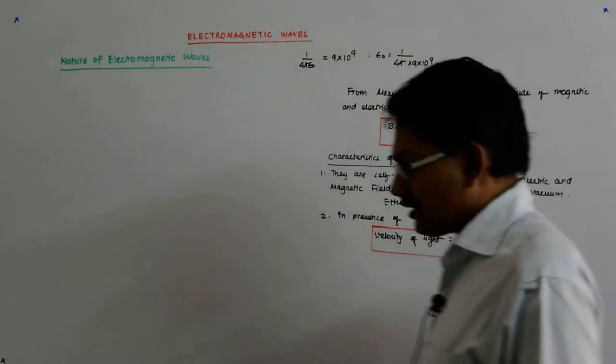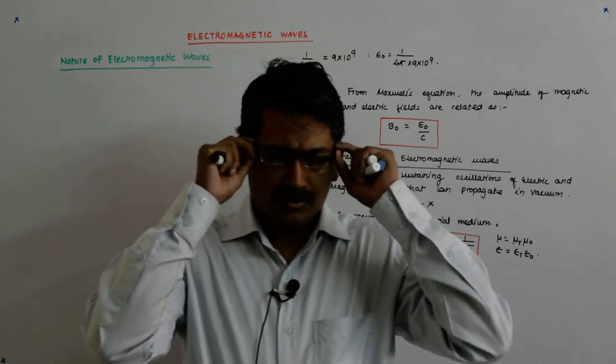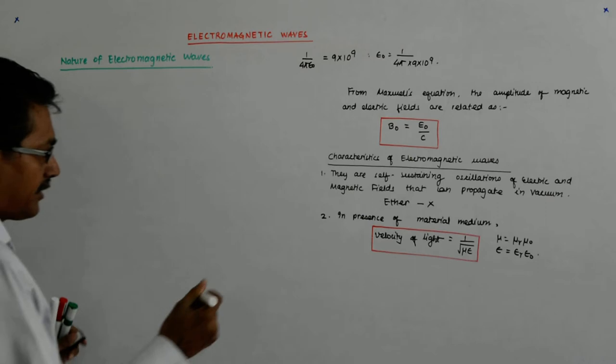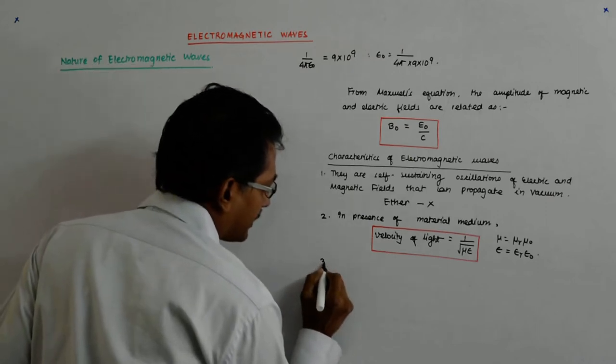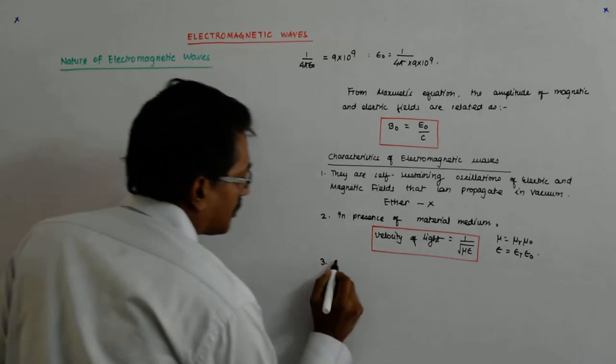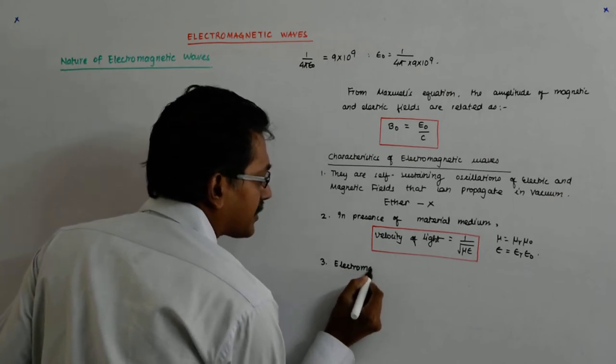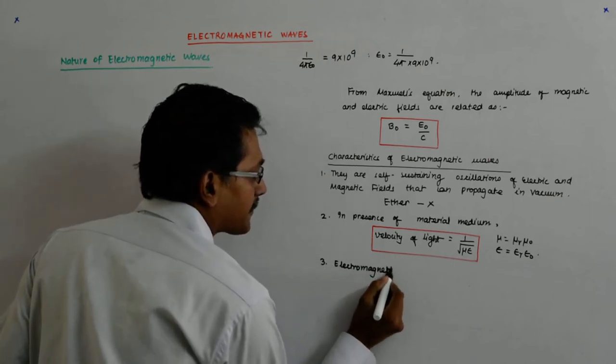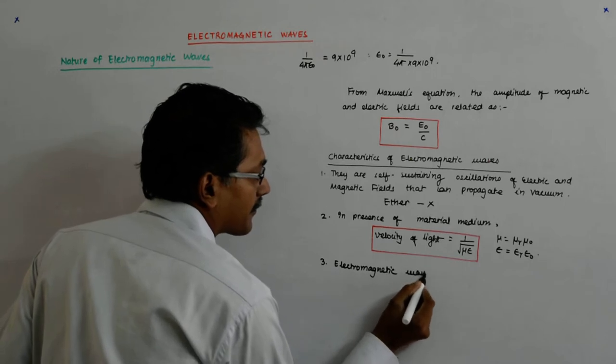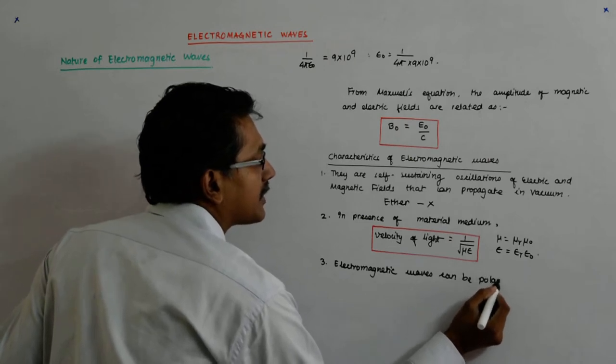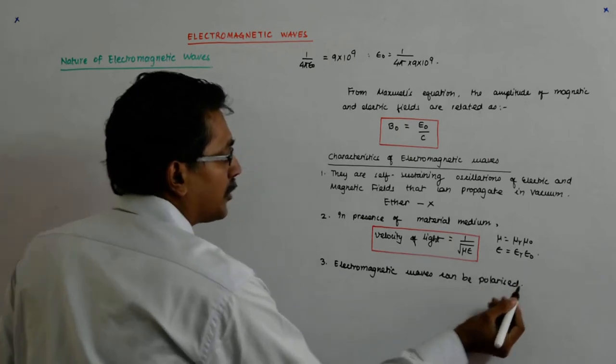Now the electromagnetic waves we defined earlier, so electromagnetic waves can be polarized. It can be polarized.